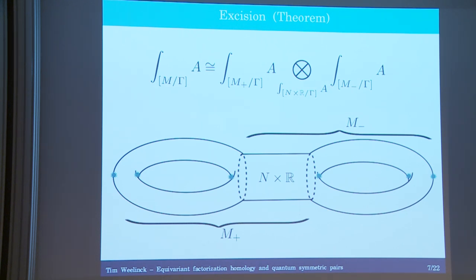This is in fact a defining property: if you have some abstract functor out of this category of orbifolds into a nice enough symmetric monoidal category, and it satisfies excision, then it must be given by a factorization homology construction.